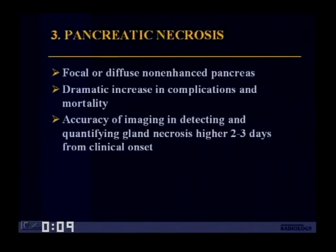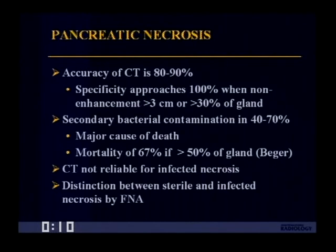Pancreatic necrosis is seen as focal or diffuse non-enhancement of the pancreas — that's why it's critical to administer intravenous contrast material when suspecting necrosis. There's a dramatic increase in complications and mortality, and the accuracy of imaging in detecting and quantifying gland necrosis can be higher two to three days after clinical onset, so a follow-up CT may be required. The accuracy of CT for necrosis is about 80–90%, with specificity approaching 100% when there is non-enhanced tissue greater than 3 cm or greater than one-third of the gland. Secondary bacterial contamination occurs in as many as half of patients, with a mortality of 67% if more than 50% of the gland is involved. CT cannot reliably distinguish infected from non-infected necrosis — that distinction is by fine needle aspiration.